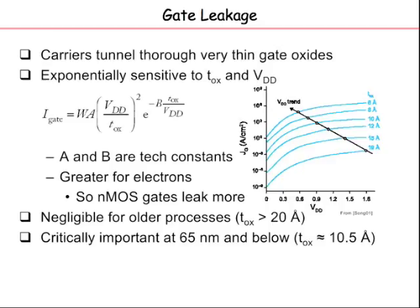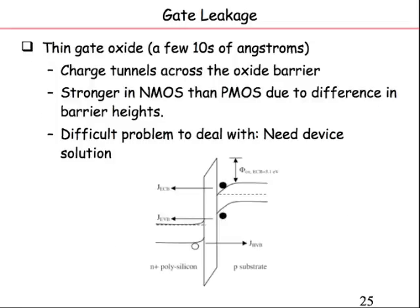Due to differences in barrier heights — from energy band considerations — the work functions can depend on the materials and how they are processed. For example, polysilicon could be N+ or P+ depending on the doping: an N+ implant gives N+ polysilicon, a P+ implant gives P+ polysilicon. The Fermi levels and work functions are slightly different, which affects the threshold voltage. This is used intentionally to engineer threshold voltages for different device types.